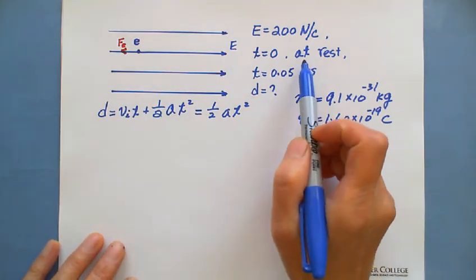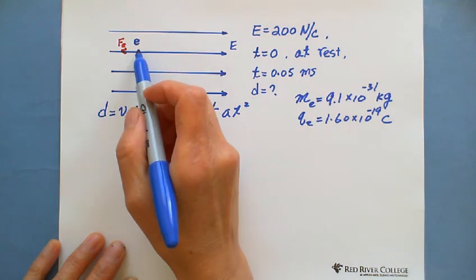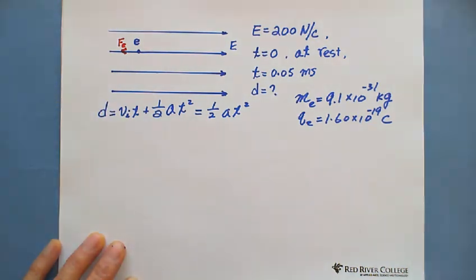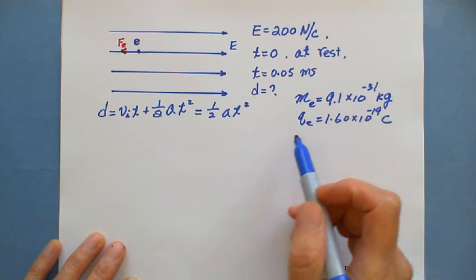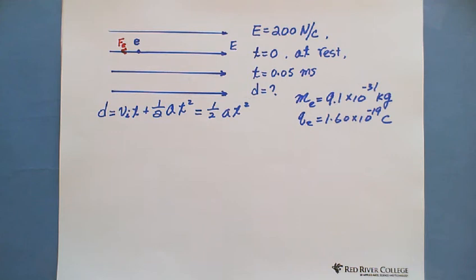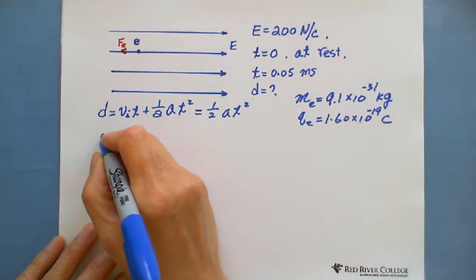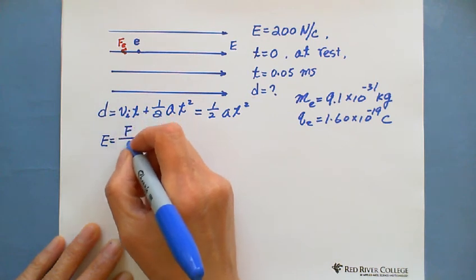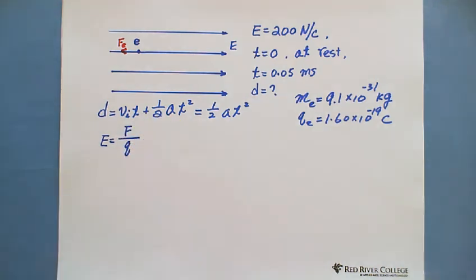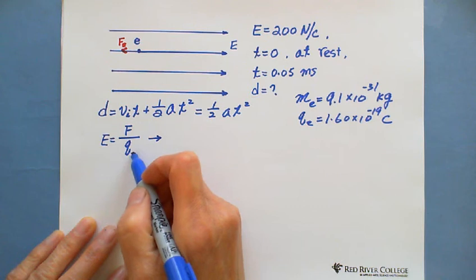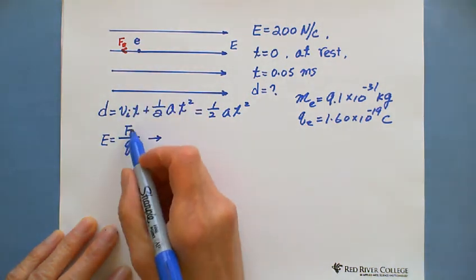So compared with the gravity and electric field force, we can ignore the gravity. So the only force acting on electron is electric field force. Because at the beginning, t equals 0 at rest, so once it's released, the electron will move this way. How far? We need to find its acceleration. To find the acceleration, we need to find Fe. To find Fe, we can use the formula from definition. E equals F over Q. So from this formula we manipulate, given E, we have Q, which is the electron charge, that's where we can find the force.